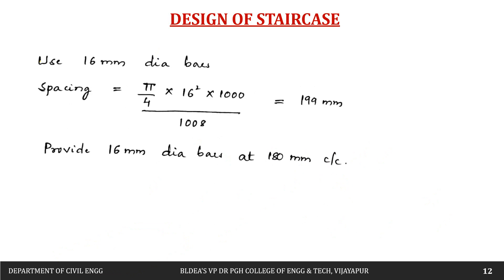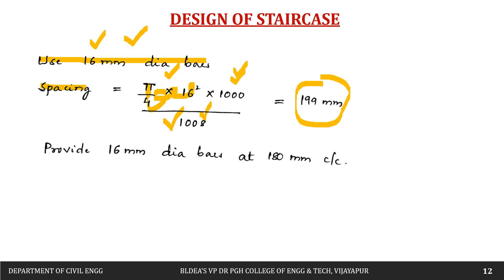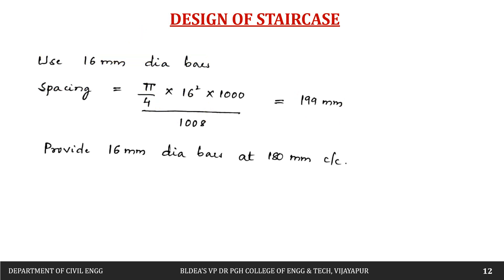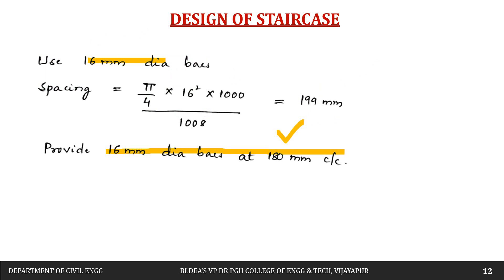Assuming 16 mm diameter bars, spacing = (area of 1 bar / area required) × 1000 = (π/4 × 16² / 1008) × 1000 = 199 mm. Round down to 180 mm. Therefore provide 16 mm diameter bars at 180 mm center to center as the main reinforcement.